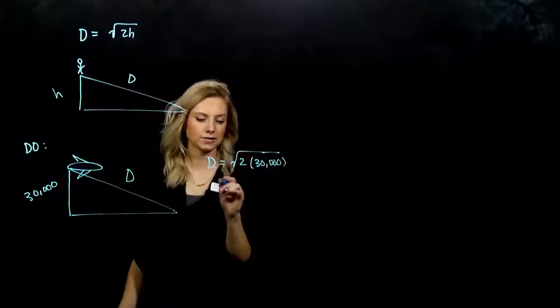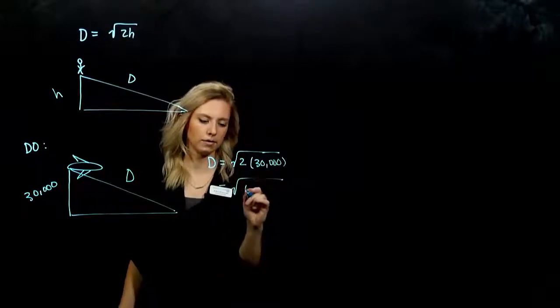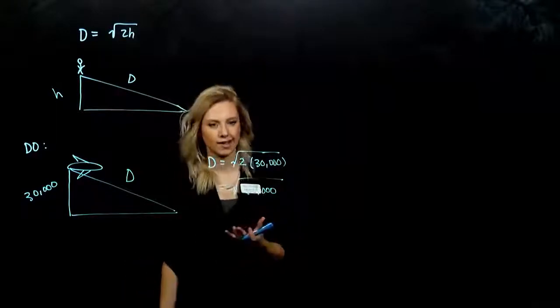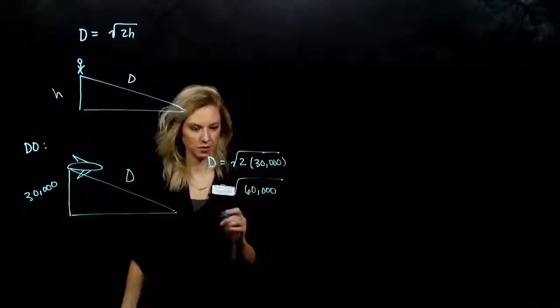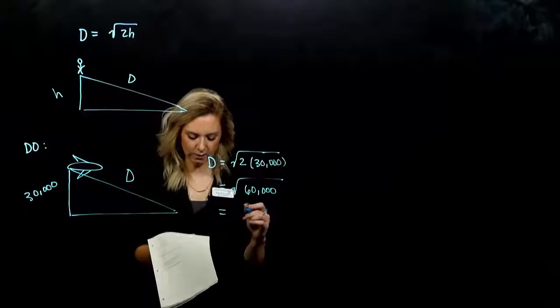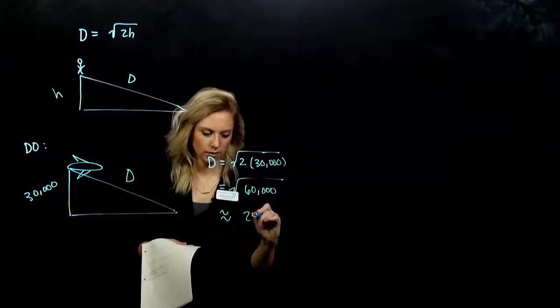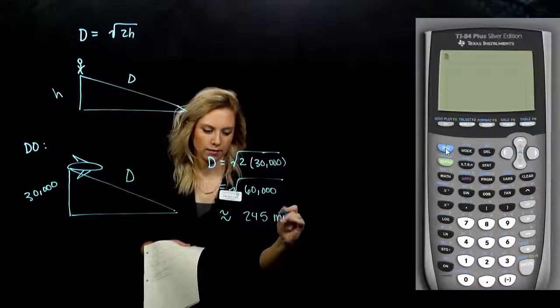So when we multiply on the inside, we're looking at the square root of 60,000, which on the exam you're going to have nicer numbers than this to work with, because that's real big. But that evaluates out to approximately 245 miles.